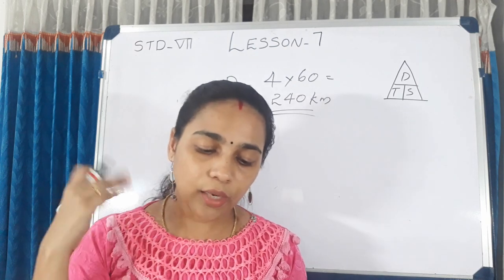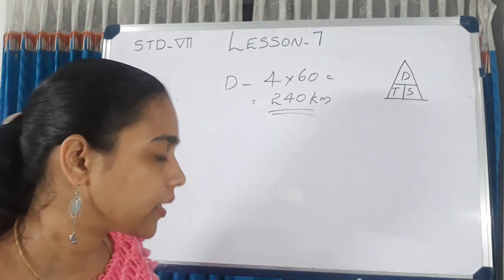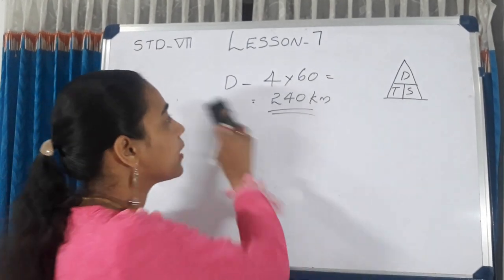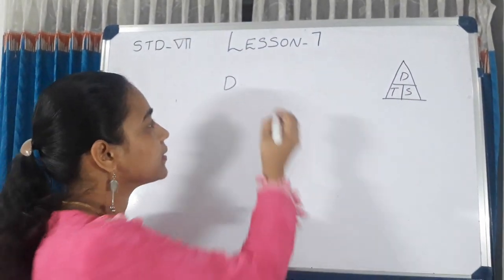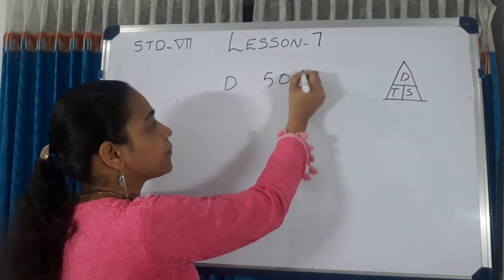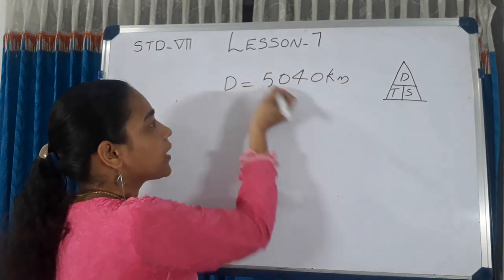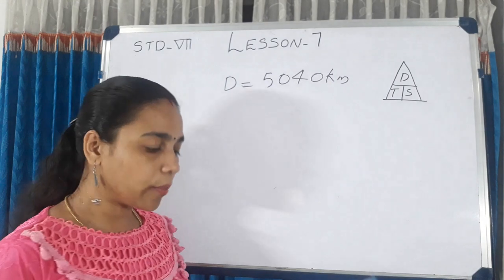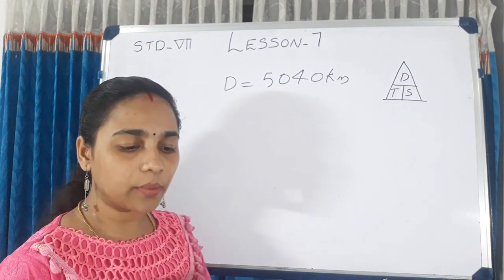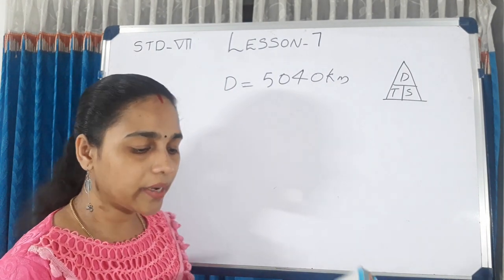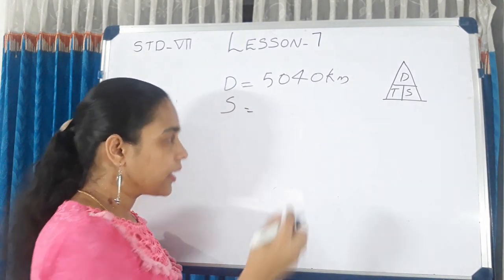For the aeroplane: the distance is 5,040 km. The average speed works out to 80 km per hour.